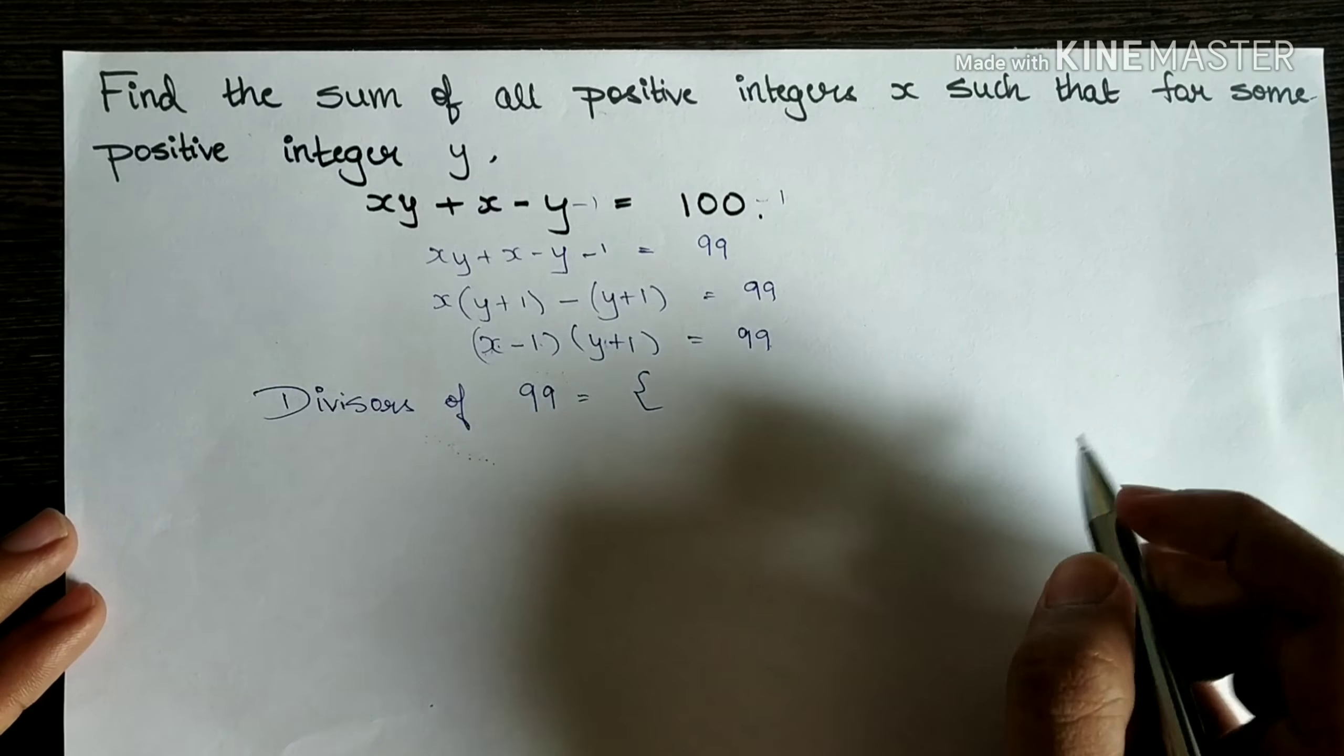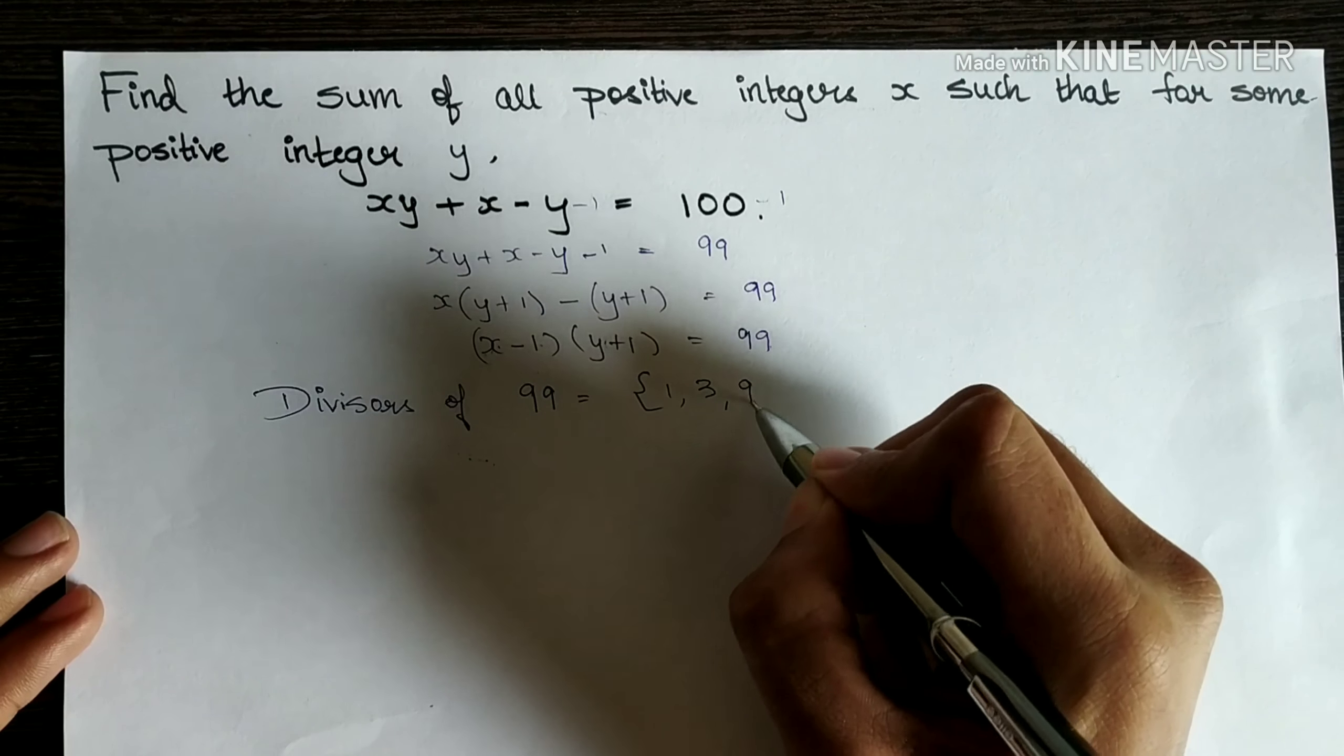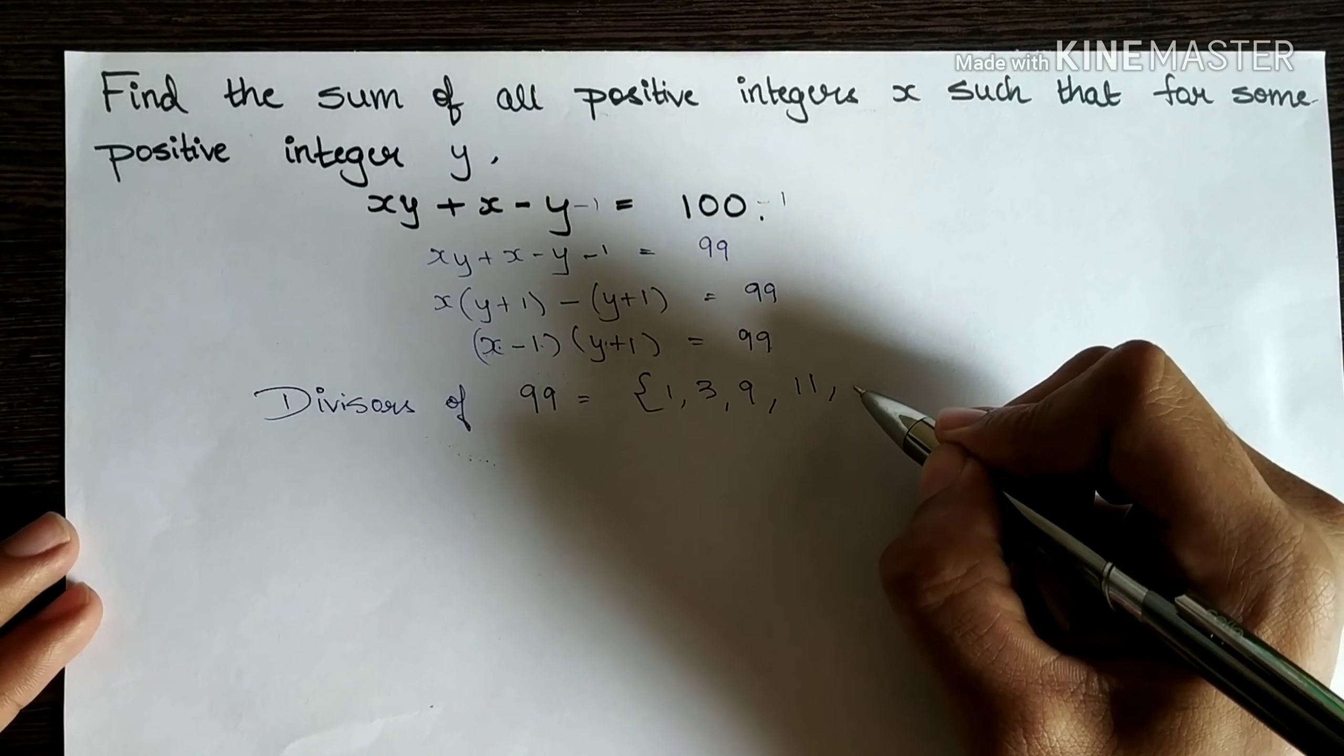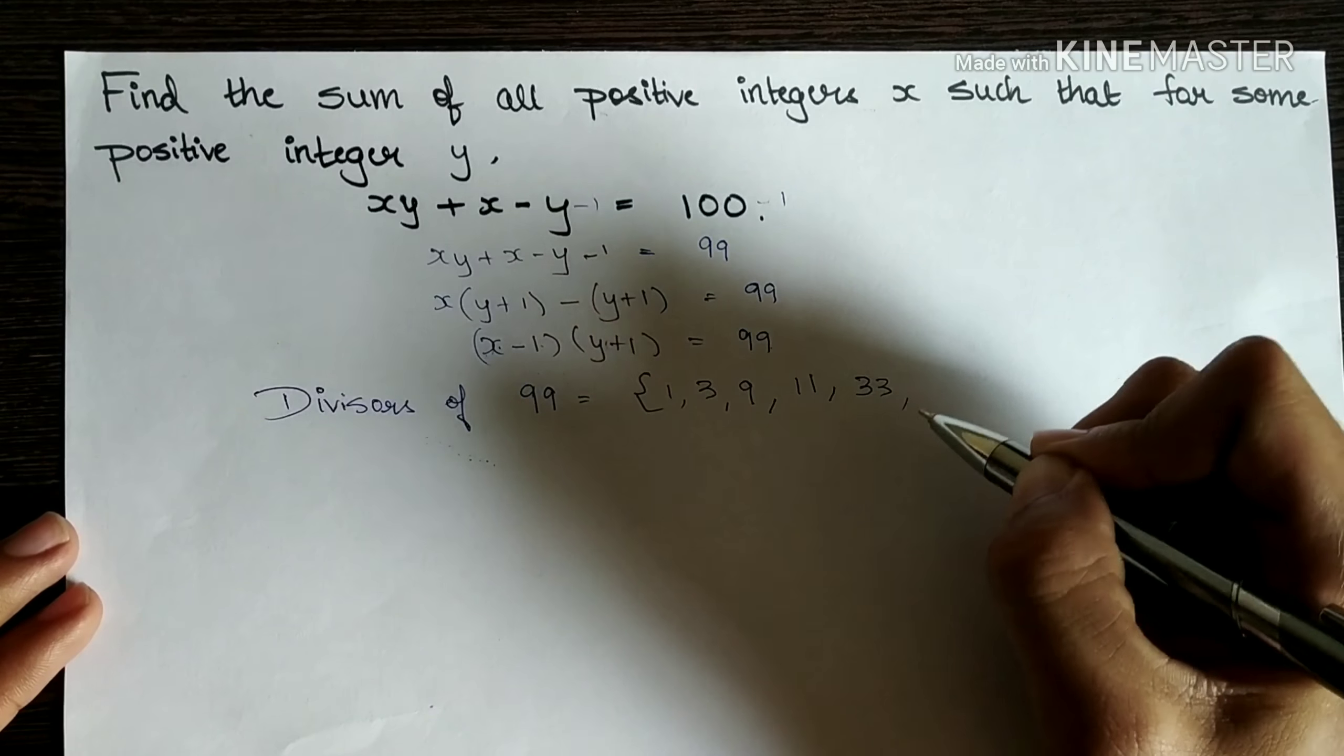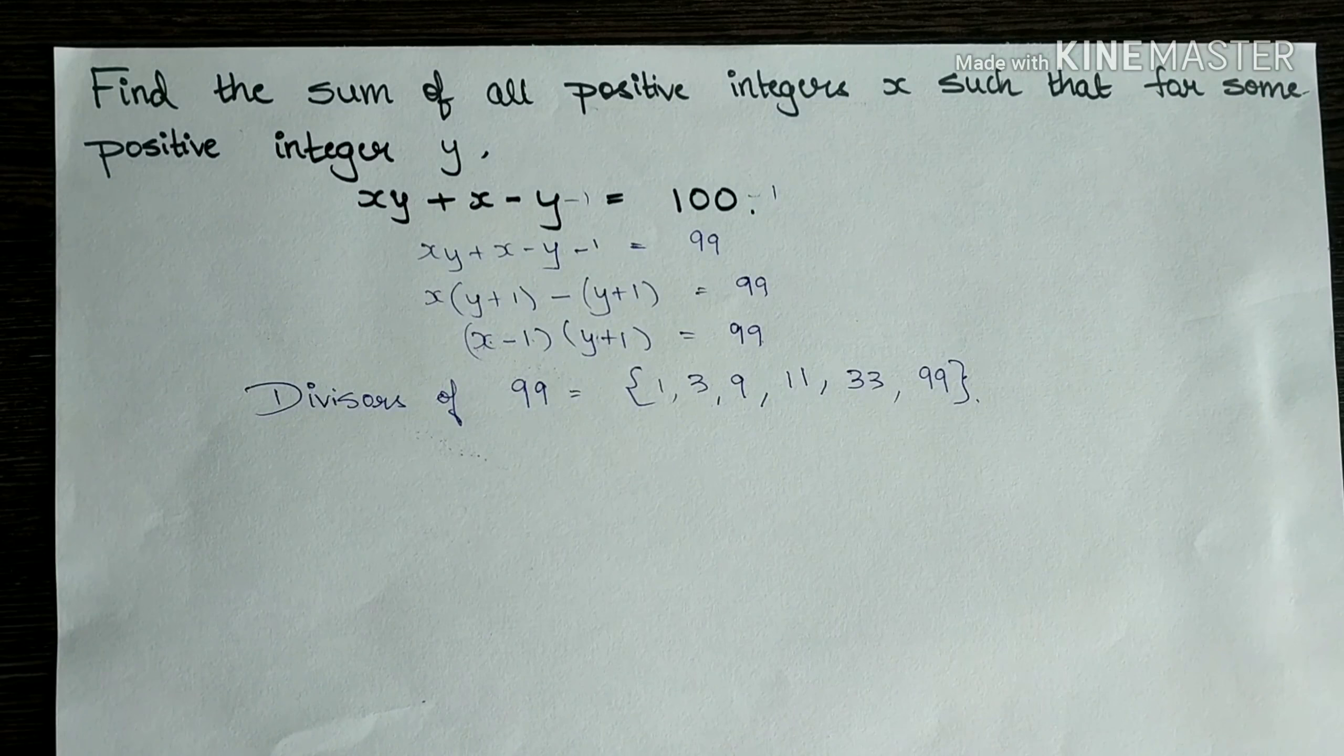Divisors of 99. Let's see. So we can begin with 1. Next 3 will be there. And 6, 9 will be there. Obviously 11 will be there. And next will be 33 into 3. 33 should be there. And the next one will be 99. So these are the divisors of 99.